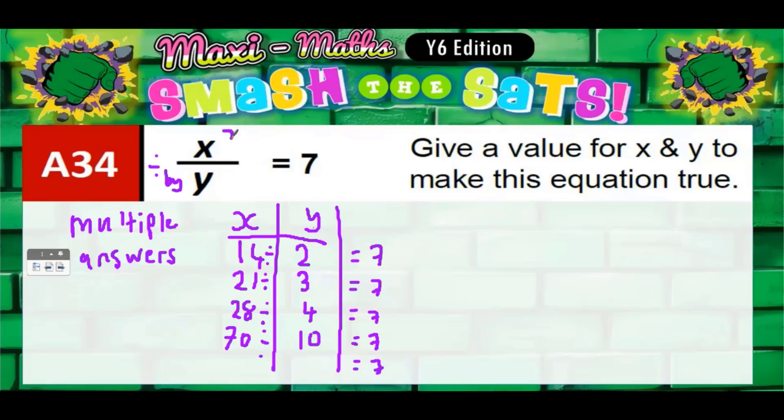Yeah, that still works. 70 divided by 10 gives us 7. And we could even go really randomly. You could go 50. So 7 times 50 would be 350, and that would work. 350 divided by 50 would give us 7.